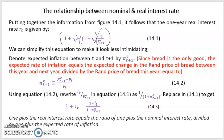We said we can further simplify this equation to make it look less intimidating. We do that by making two simple manipulations to make equation 14.1 look more friendly. First, by denoting the expected inflation between t and t+1. Since bread is the only good, the expected rate of inflation equals the expected change in the price of bread between this year and next year, divided by the price of bread this year, given by equation 14.2.